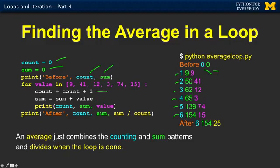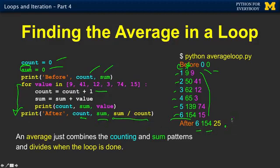The running sum goes 9, 50, 62, 65, 139, 154. This is the running total. This is the count. Then we finally get done because there were only six things — the for loop dumps us out. How many did we get? Six. What was the total? 154. And then divide sum by count — that should be 154 divided by six, which is 25.666 or something like that. So we divide sum by count and now we have calculated the average.